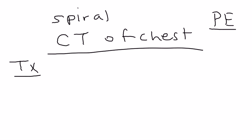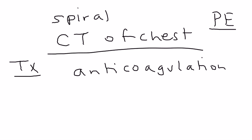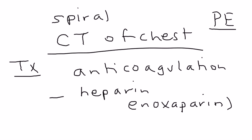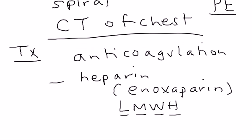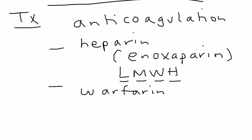The treatment of DVT is essentially anticoagulation. You give anticoagulants with the hope of breaking the clots so they don't develop into emboli and travel up the circulation. Initially, you give heparin products — usually enoxaparin, a commonly used low molecular weight heparin — followed later by warfarin. Warfarin is given for a duration of three to six months.